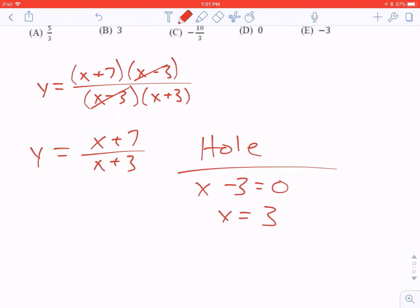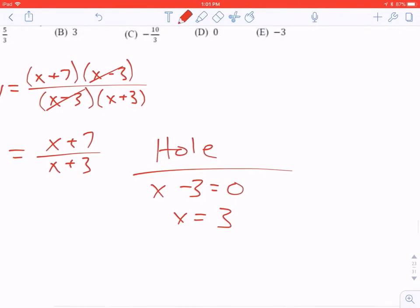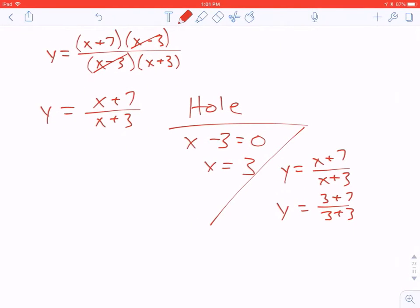To find the y coordinate of your hole, we're going to plug in to what's left of the function. y equals x plus 7 over x plus 3. The 3. And you end up with 10 over 6 as the y value of the hole, which is the same as 5 thirds. This has a hole at 3, 5 thirds.